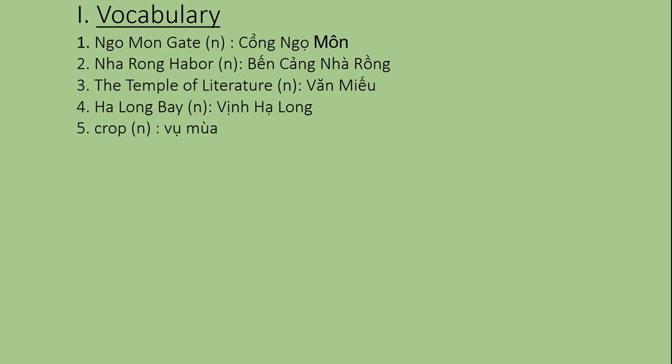Number six: Water Buffalo - đó là con trâu. Number seven: Corn - Trái Bắp, Trái Ngô. Các bạn nên ghi lại các từ vựng và những gì cô giảng vào tập bài học của mình nhé.